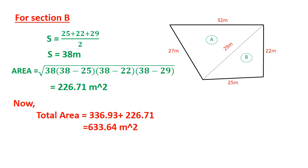We know the area for section A and we also know the area for section B. The total area can be determined by adding these two values: 336.93 plus 226.71, which is around 563.64 square meters. This is the total area in terms of square meter.